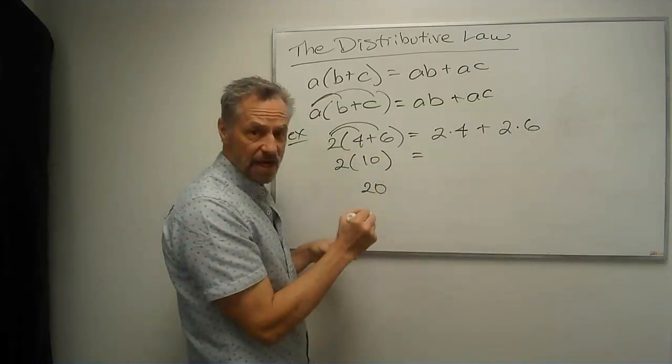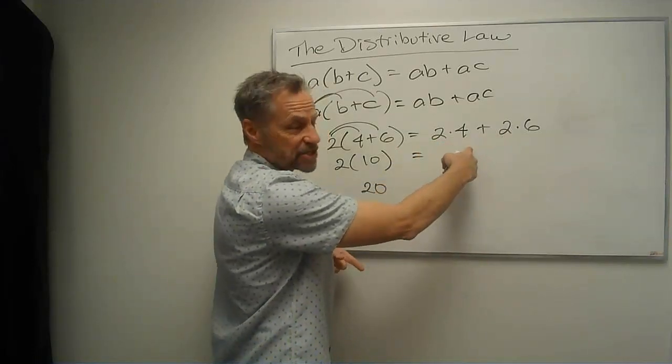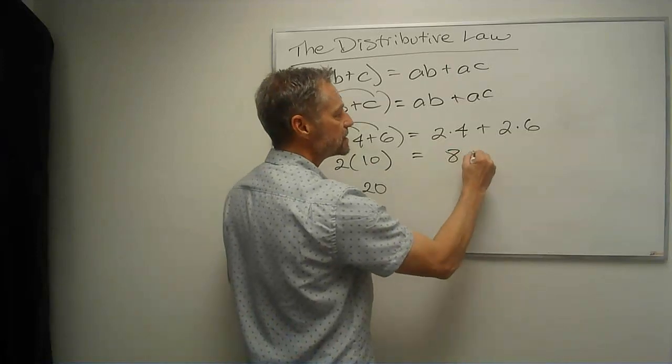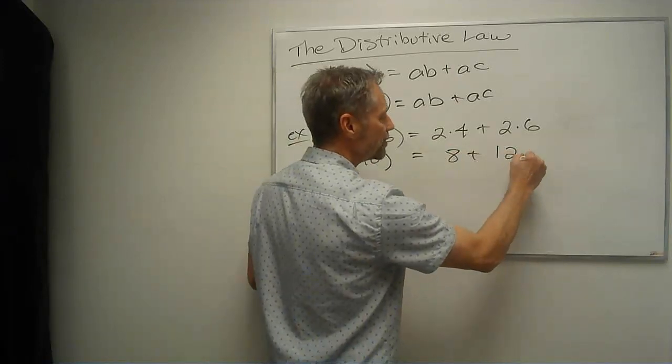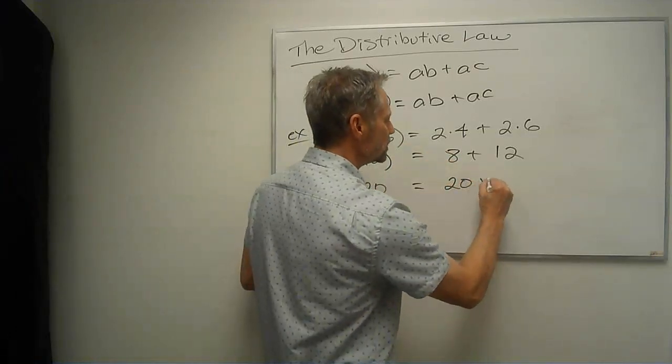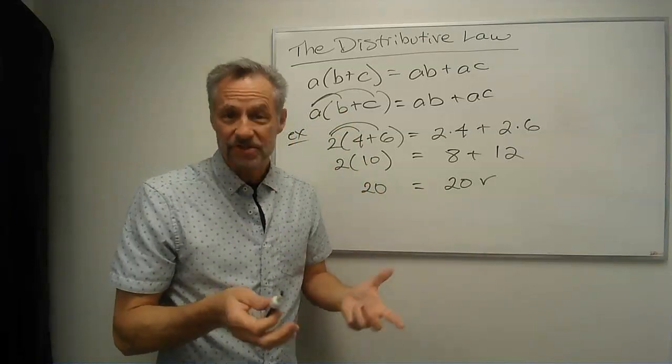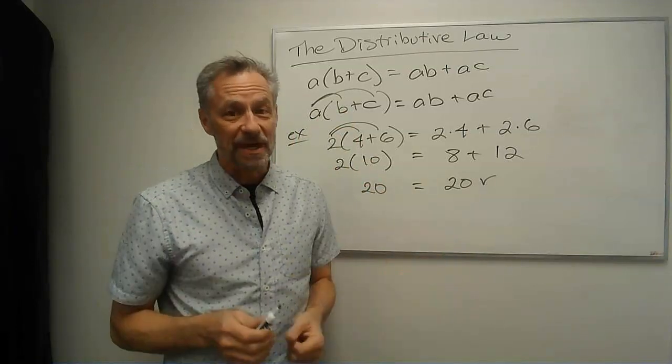Well, on the other side, we do a multiplication each place before the addition. 2 times 4 is 8, 2 times 6 is 12, but lo and behold, 8 plus 12 is 20 also. So we see in this instance, the distributive law works, and it always works. That's why it's a law.